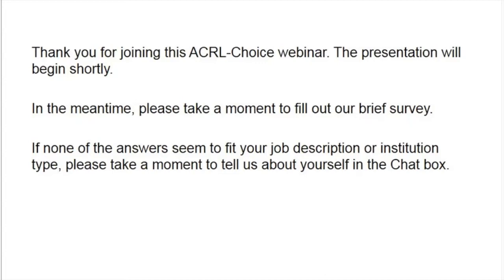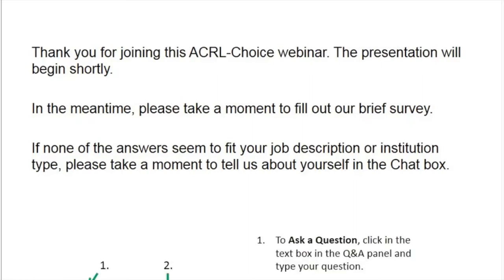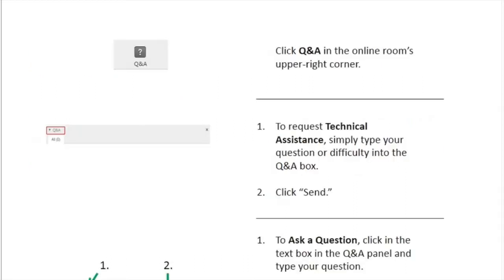Before we get started, I'd like to point out a few features of the webinar software. In the main area of the screen, you can follow along with the presentation materials. Along the right-hand side, you will see a Q&A panel. If you don't, please click the button labeled Q&A in the upper right-hand corner of the screen to activate the panel. The Q&A panel will allow you to submit questions to our speakers. At the end of the presentation, Maureen and Paul will take a few minutes to respond to your questions.